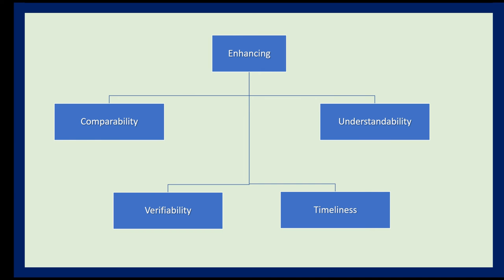The enhancing characteristics are VCCUT: Verifiability, Comparability, Understandability, and Timeliness. Verifiability means items in financial reports can be verified — if one accountant computes something, another accountant should arrive at the same result. There should also be supporting documents to verify that a transaction actually occurred, so that if investigated, the records can be substantiated.